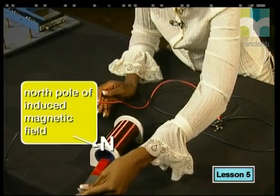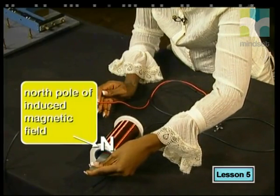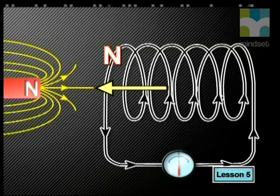This means that the end where the magnet entered the coil must be the north pole of the induced magnetic field. So the induced magnetic field opposes the magnetic field of the moving magnet. The magnetic field of the moving magnet is repelled by the north pole of the solenoid.